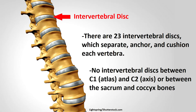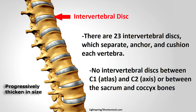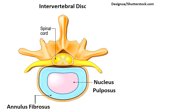Between the vertebrae there are 23 intervertebral discs which separate, anchor, and cushion each vertebra. It is important to note that there is no intervertebral disc between C1 (also called atlas) and C2 (called axis), or between the sacrum and coccyx bones. As you move down the spine, these shock-absorbing pads of fibrocartilage progressively thicken in size, and they consist of two main parts: the nucleus pulposus and the annulus fibrosus.